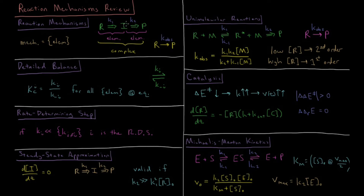To help us out in some of these cases where rate laws can become complicated, we can use the steady state approximation. The steady state approximation says that the change in the concentration of an intermediate over time is equal to zero — there is no time derivative of the intermediate concentration.